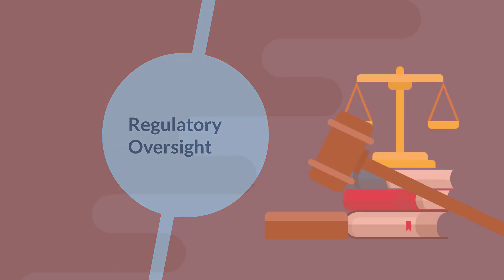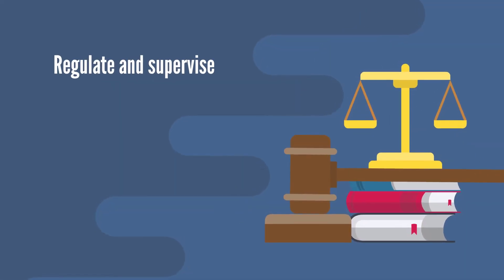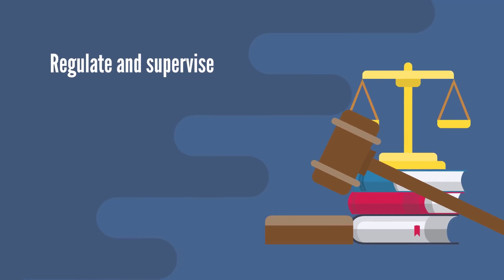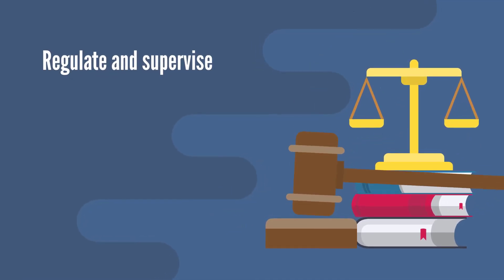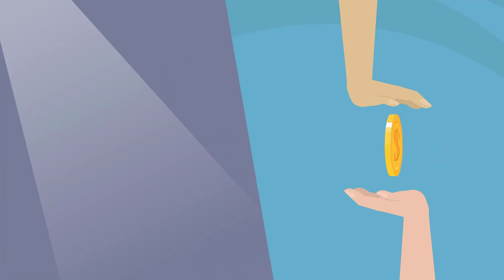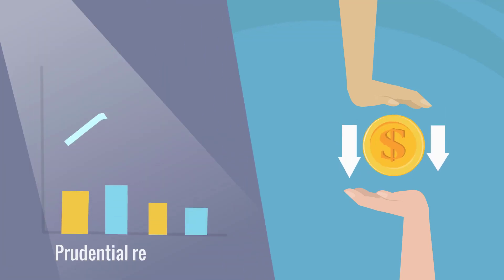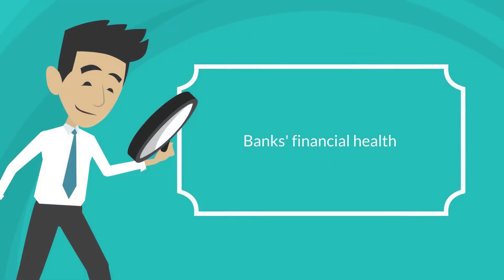Regulatory oversight. Central banks regulate and supervise financial institutions to ensure the stability and integrity of the financial system. This includes setting prudential regulations, conducting regular examinations of banks' financial health, and enforcing compliance with banking laws and regulations.